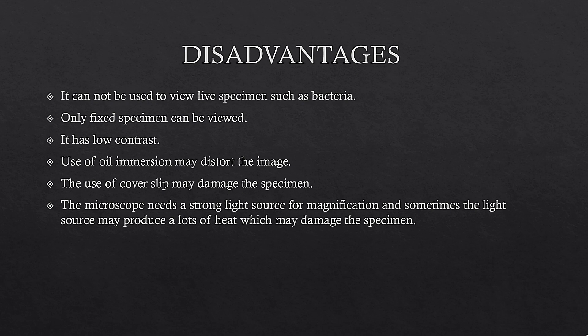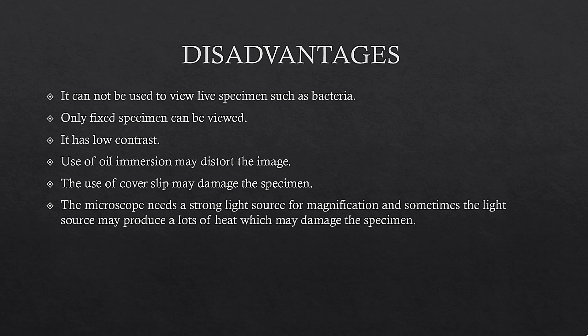The bright field microscope cannot be used to view live unstained species such as bacteria. This is because if we stain the live species, it will be dead, and without staining we can't see them clearly, because the live species carry bright light and the bright field background is also bright — so we cannot differentiate both the specimen and background.